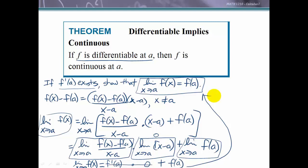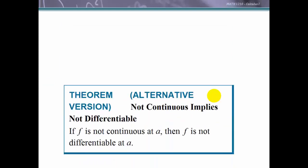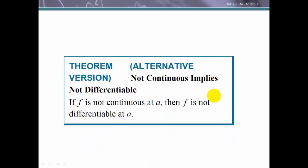An alternate version of this theorem is its contrapositive: if f is not continuous at a, then it is not differentiable at a — because differentiability implies continuity, so if it is not continuous it cannot have been differentiable.